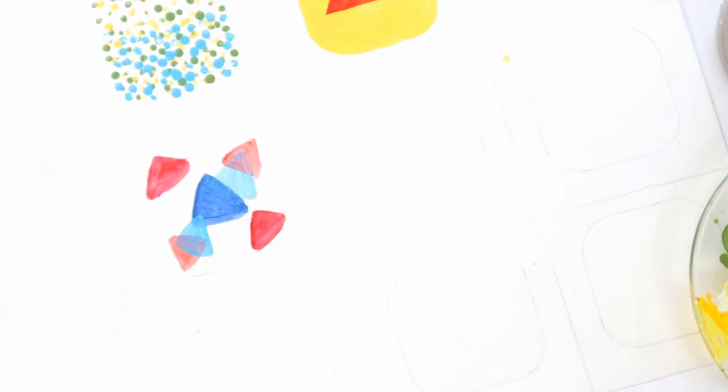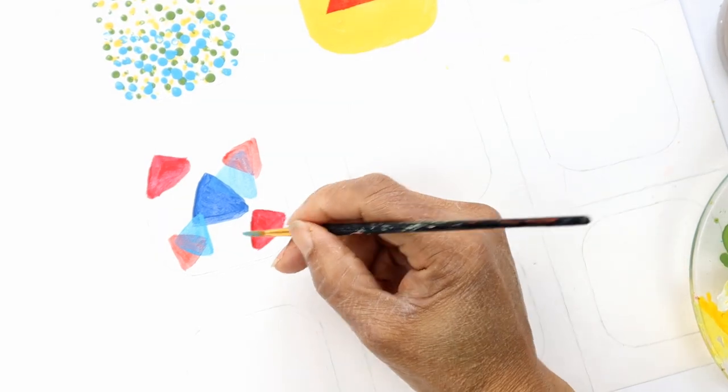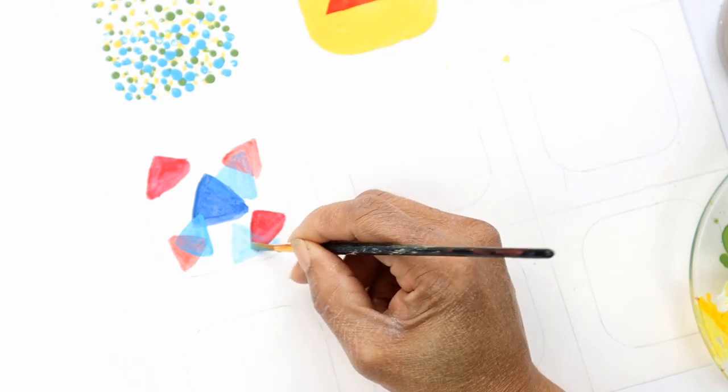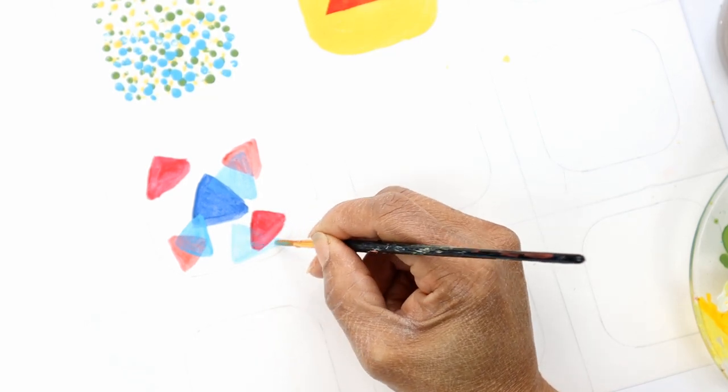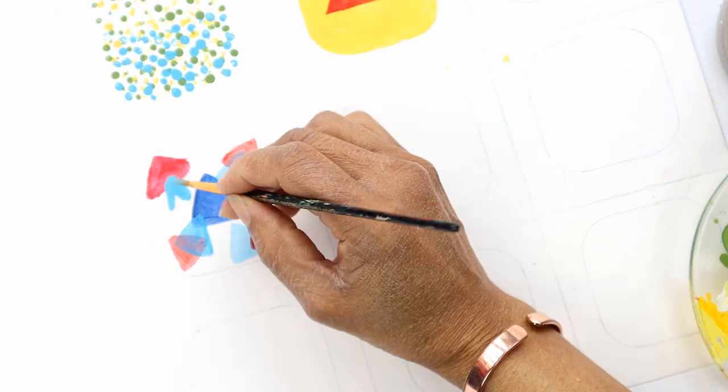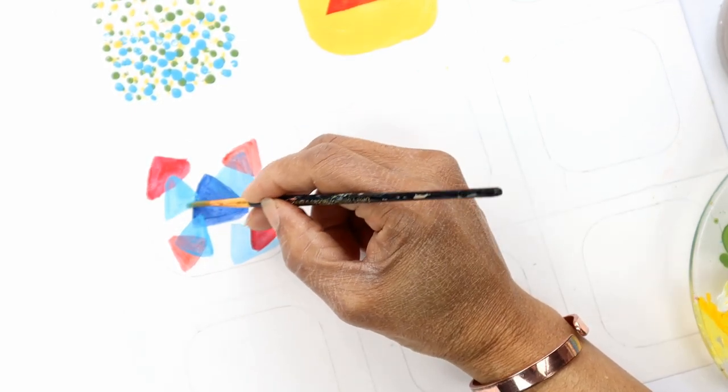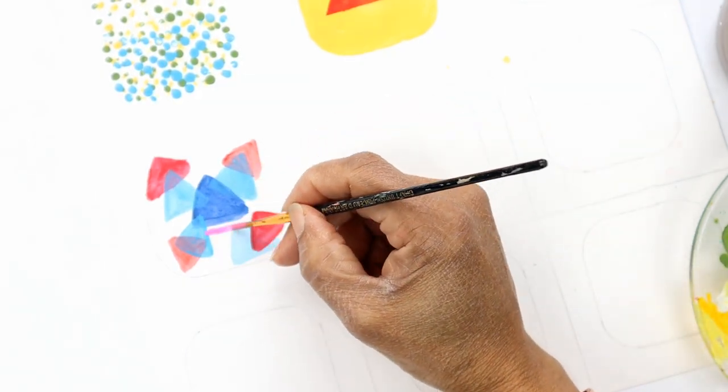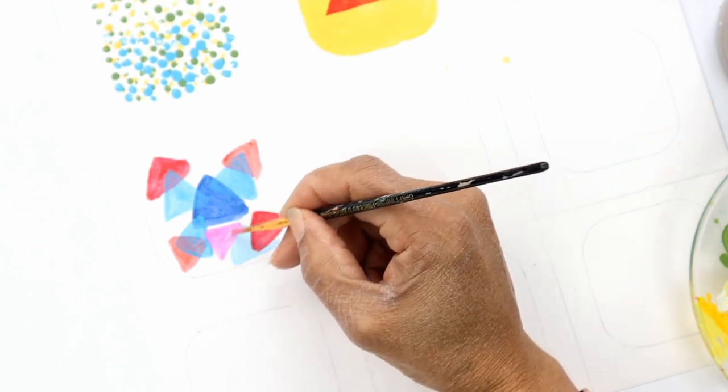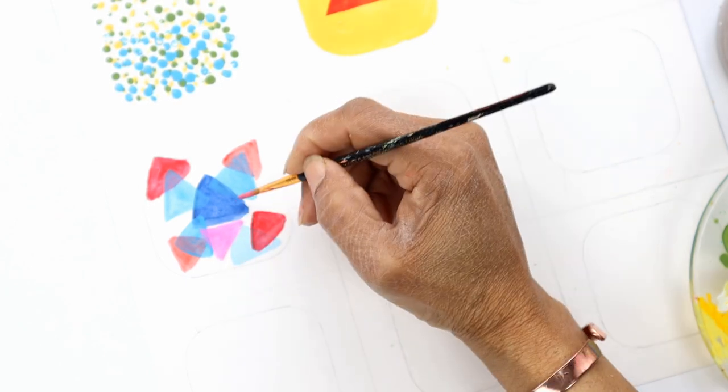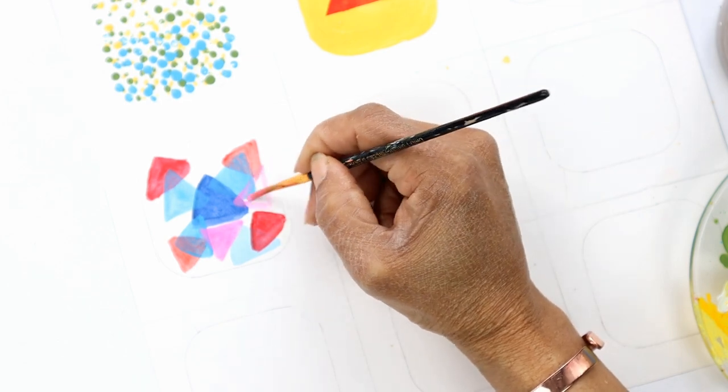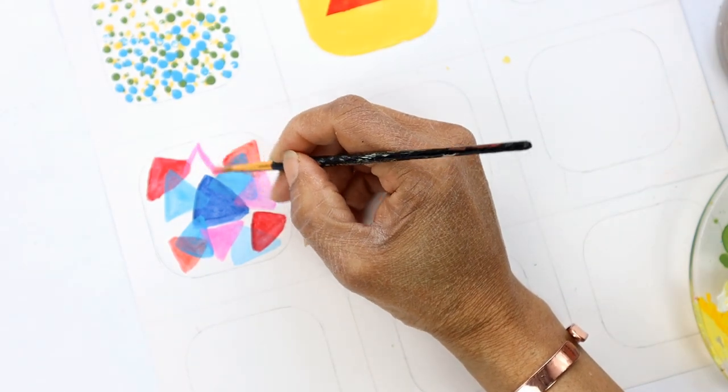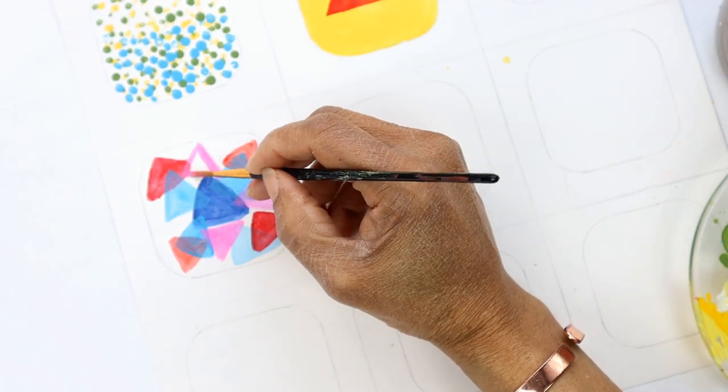If you find you placed too much paint down, just lift the excess straight away with a nice clean brush. There we go, now it looks like layers of colorful tissue paper.